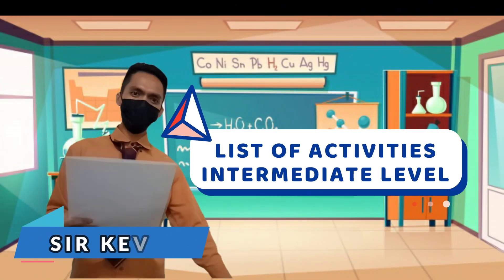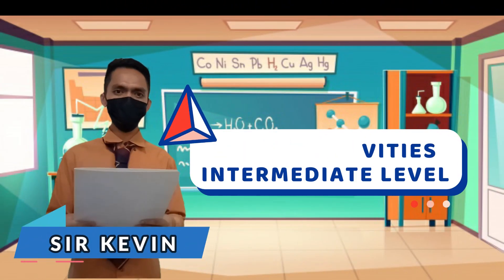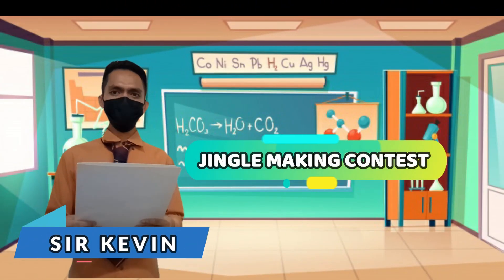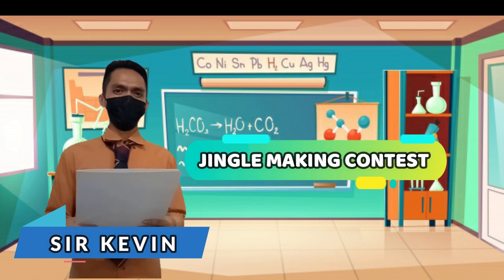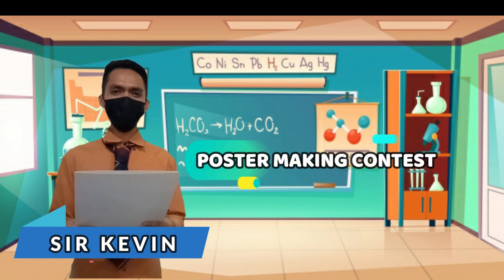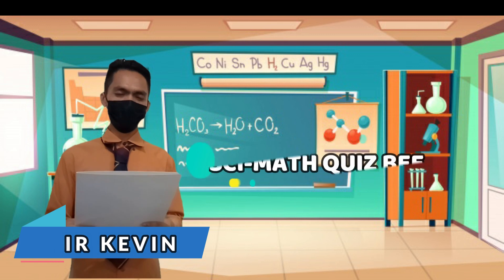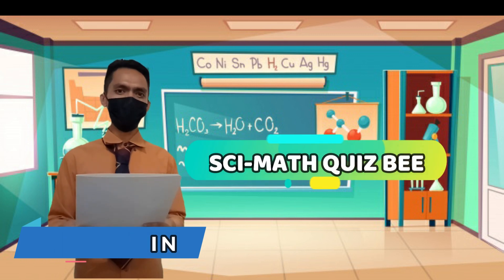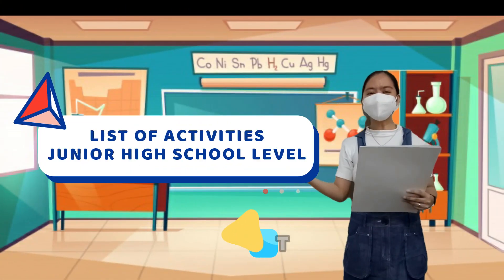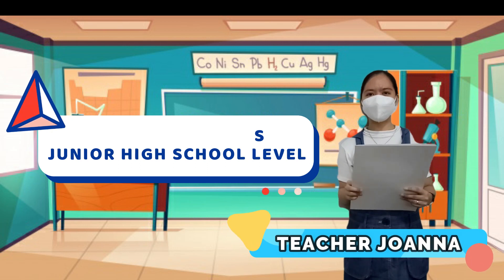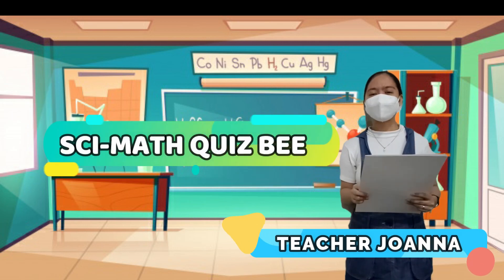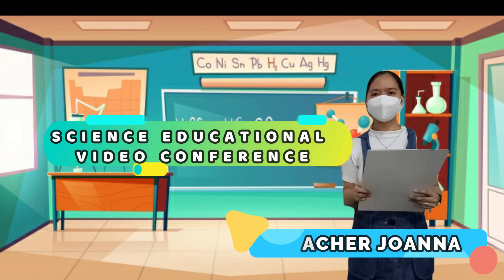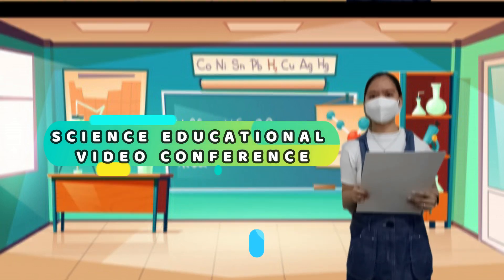Here are the activities for the intermediate level: Jingle Making Contest, Poster Making Contest, and Sci-Math Quiz B. For the junior high school level, we have the Sci-Math Quiz B, Science Life Hacks, and Educational Vision 1-10.